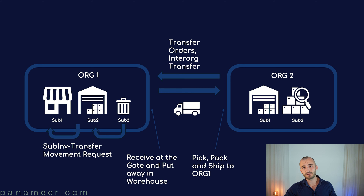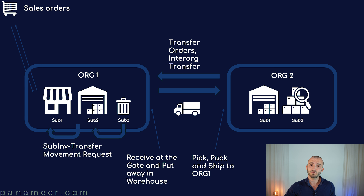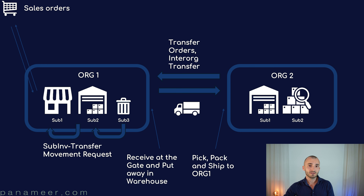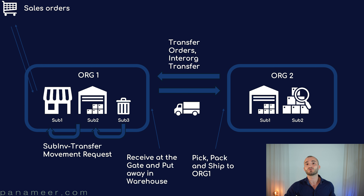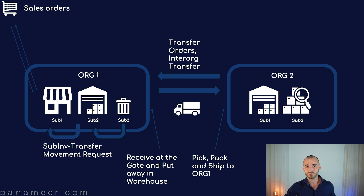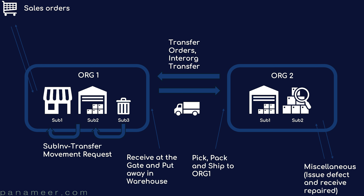Group number three is everything related to sales orders. Staying with the IKEA example, customers do not have to go to IKEA — they could also order online. In that case, inventory receives a sales order and then proceeds with picking, packing, and shipping the order to the customer.